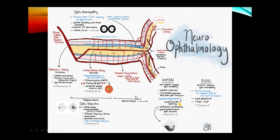Optic neuritis is almost always of the posterior optic nerve, so the eye looks normal acutely. Patients have a severe central scotoma, loss of color vision (dyschromatopsia), and the objective finding of an afferent pupillary defect.